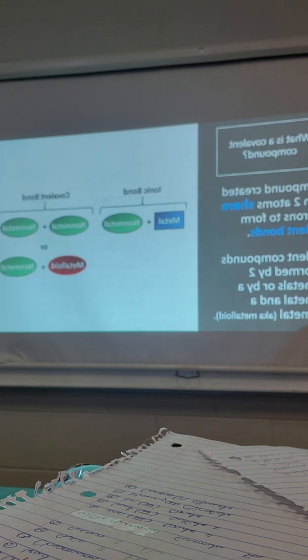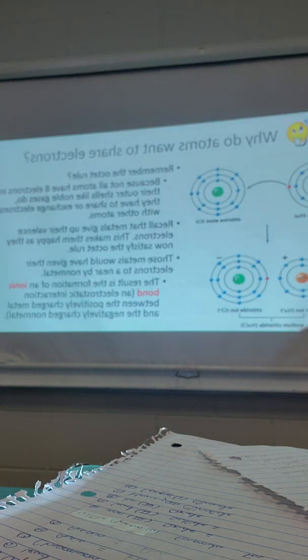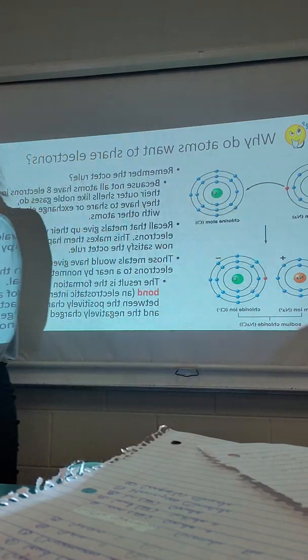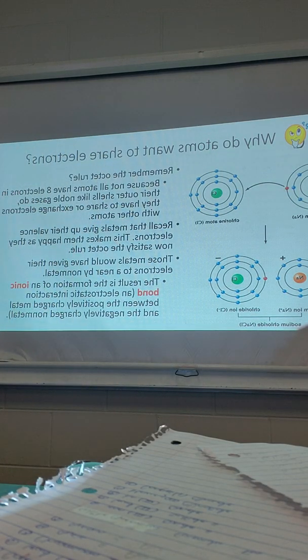Do you guys remember when we talked about metals giving up and non-metals gaining? You don't have to write this slide down. This is just a review. So over here, we know that sodium has one valence electron. How did we know that? Because it's in group 1. So over at the periodic table, sodium is in group 1, therefore it has one valence electron.